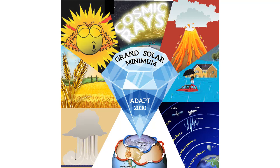I tried to bring it down to explaining it to a five-year-old child with this chart — I tried to make it as easy to understand as possible. It's all the facets of this grand solar minimum culminating to affect our planetary food system. This is what we need to talk about.